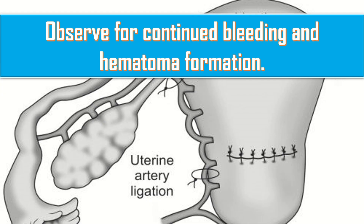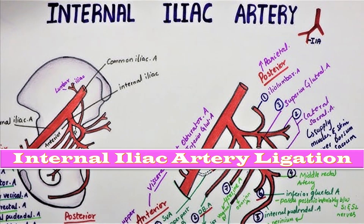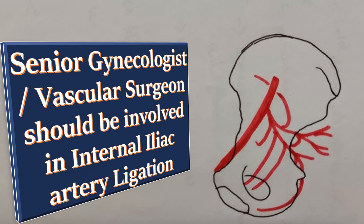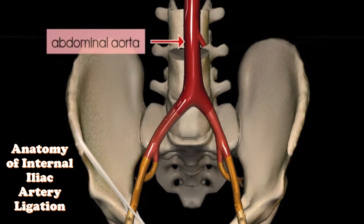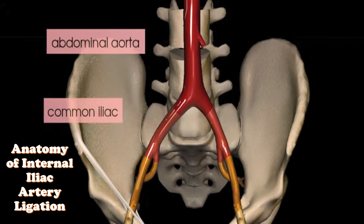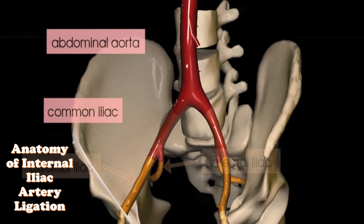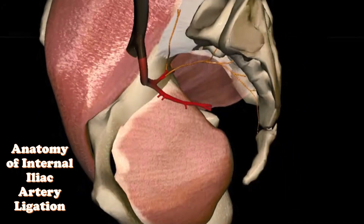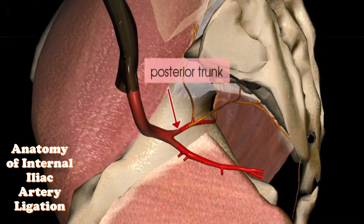After ligating the uterine arteries on both sides, if bleeding does not stop, the next step in stepwise devascularization is internal iliac artery ligation. A senior gynecologist or vascular surgeon should be informed. The abdominal aorta divides into two common iliac arteries at the level between L5 and S1. The common iliac divides into external and internal iliac arteries, and the internal iliac artery divides into anterior and posterior trunks.